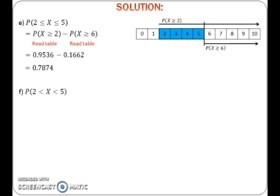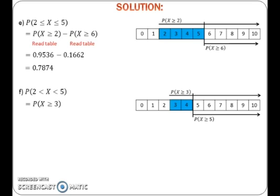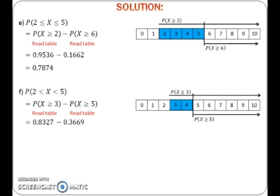To find the probability of x between 2 and 5, first draw a number line from 0 to 10. After that, mark the part that we want, which is 3 until 4. To get this, take the probability of x greater than or equals to 3 and cut off the probability of x greater than or equals to 5. Read both values from the table and calculate the probability.